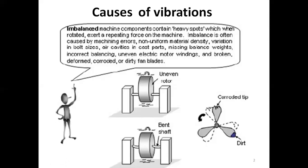Imbalance in rotating machines is one of the main causes of vibration. For example, a fan has a number of blades. If one blade has some dirt, it will have more weight than the others and will produce a centrifugal force when rotated, causing vibration. Similarly, if one blade is corroded, its weight is relatively smaller than the other blades, so the centrifugal force of the other blades would cause severe vibration in the rotor.